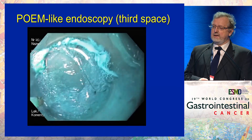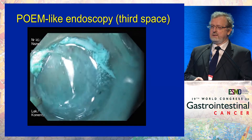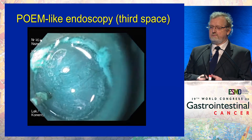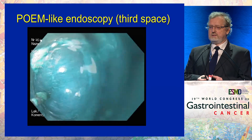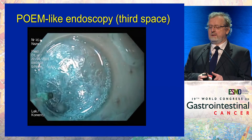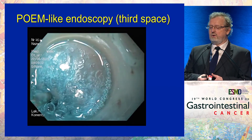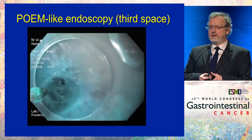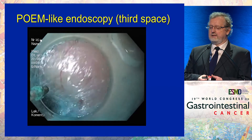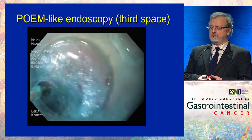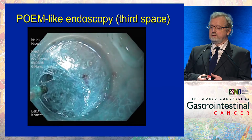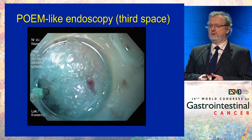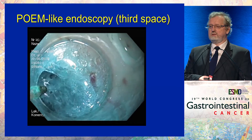We go down and make a tunnel within the esophageal wall, allowing the whole endoscope to enter inside. We go down — this is the muscle layer — continuing down to the lower esophageal sphincter.